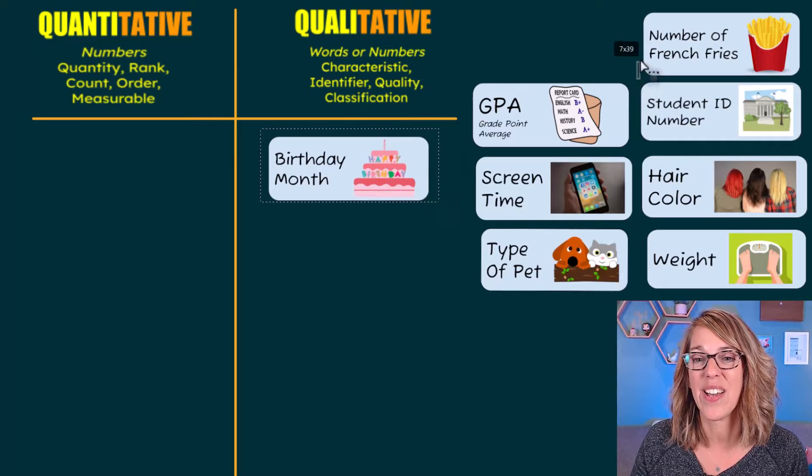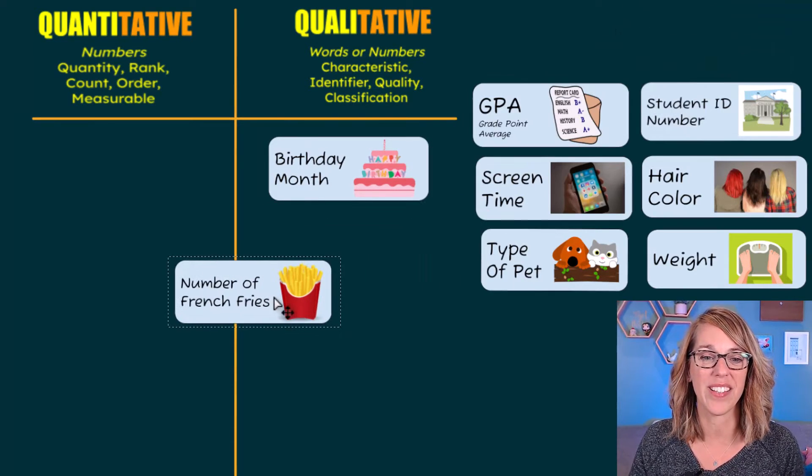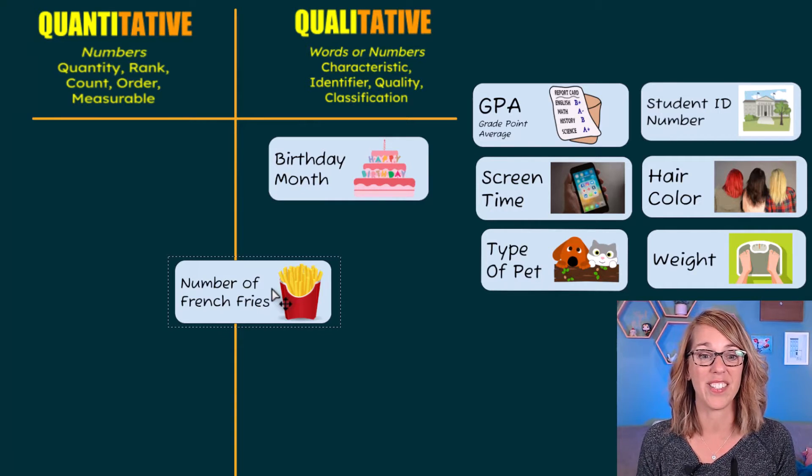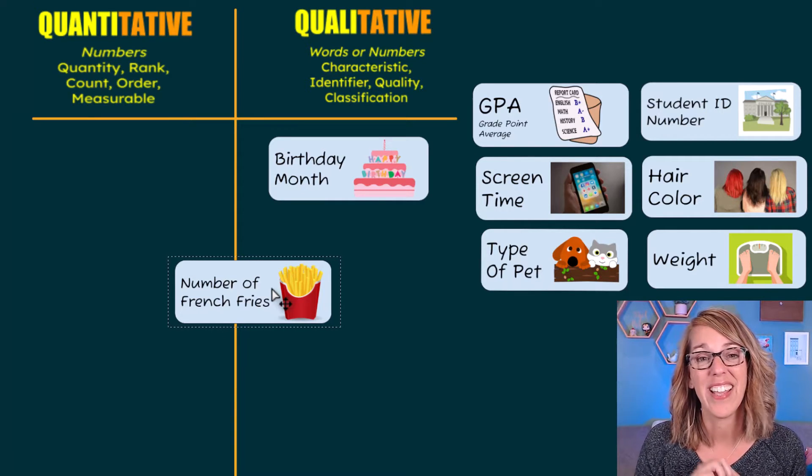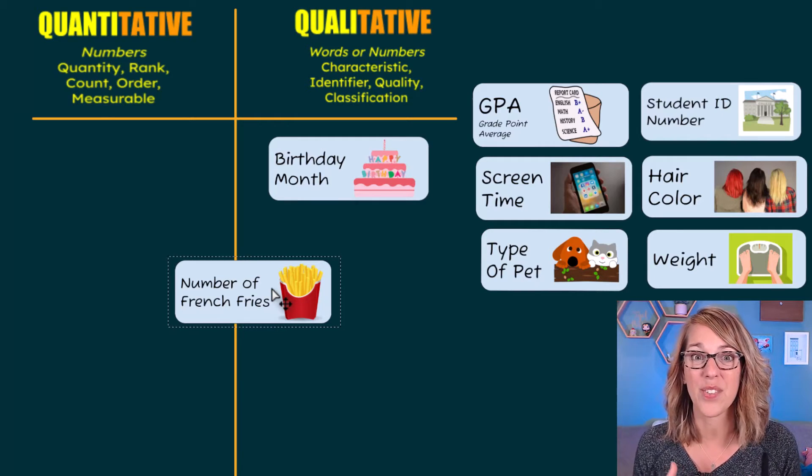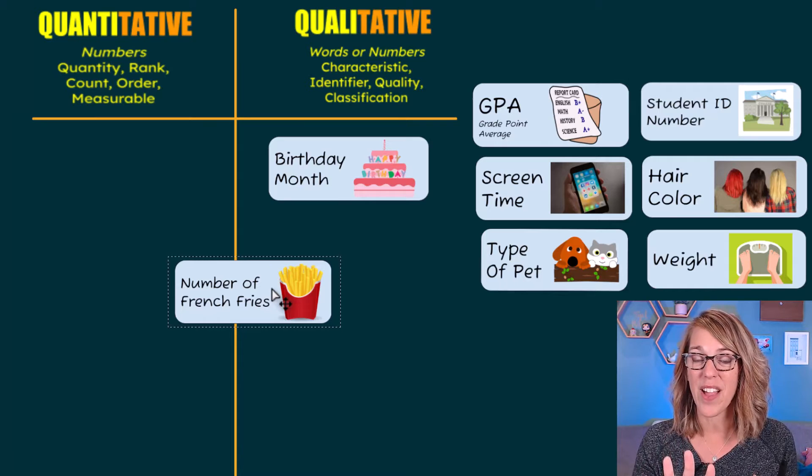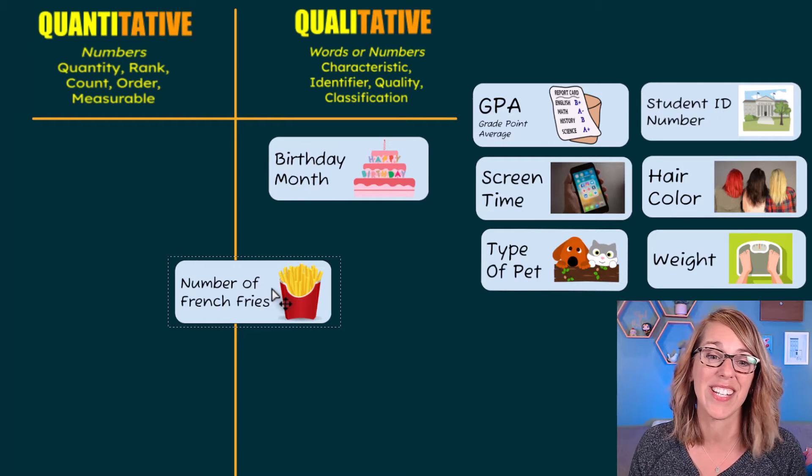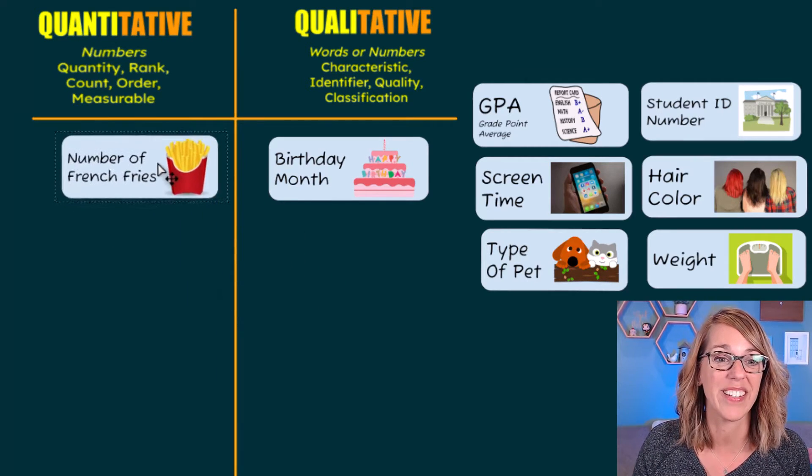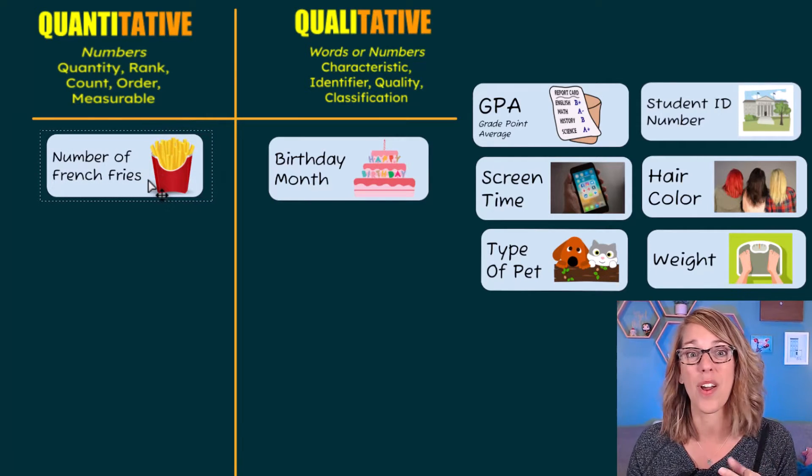Next, let's take a look at number of french fries. So you order fries and you get it in this fry holder sleeve thing, and you count up how many that you've got. So you're going to end up with maybe 10 fries or 25 fries. Those numbers are not just an identifier. It's a quantity. 25 would be more than 10 fries. So we're going to put that under quantitative or a quantity.